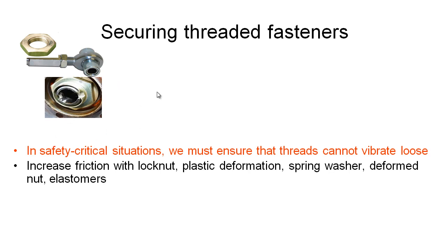For a more reliable solution, we can buy nuts that we plastically deform to ensure they don't come undone. This might be used on the end of a crank on a car engine — we put this big nut on, and the shaft has slots cut into it. Using a hammer and chisel, we hammer in the deformable sides of the nut into those slots so it can't come undone easily. To remove it, we have to hammer that deformation out again before we can unscrew the nut.